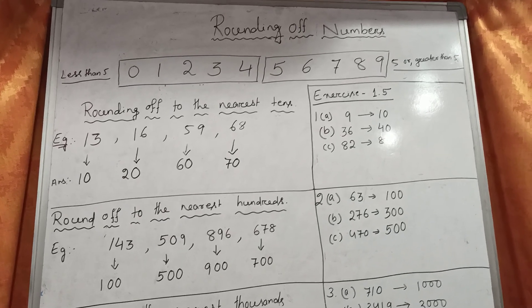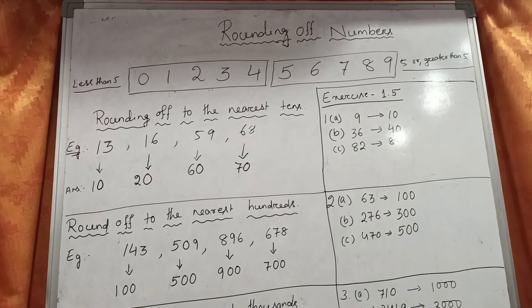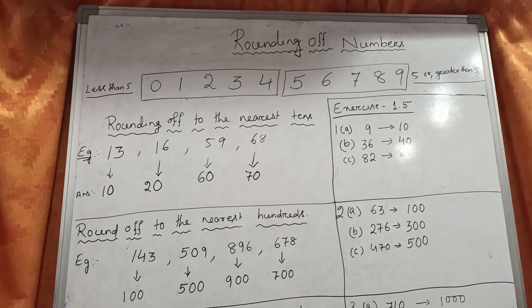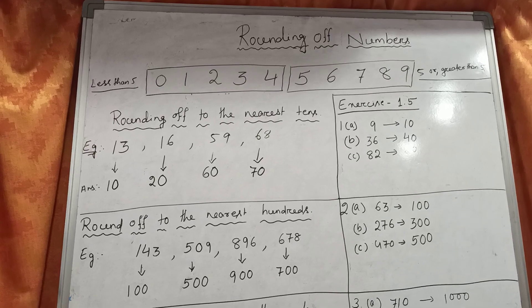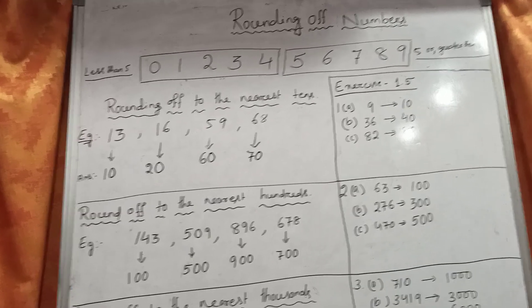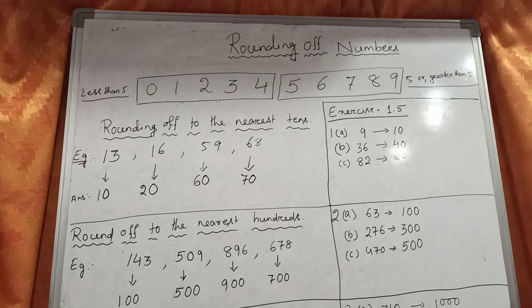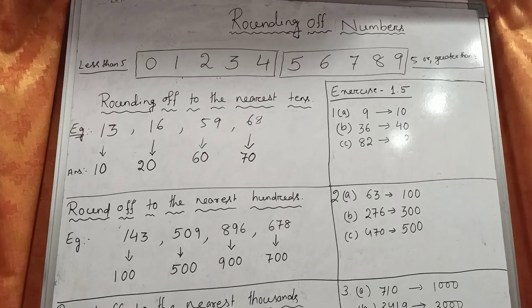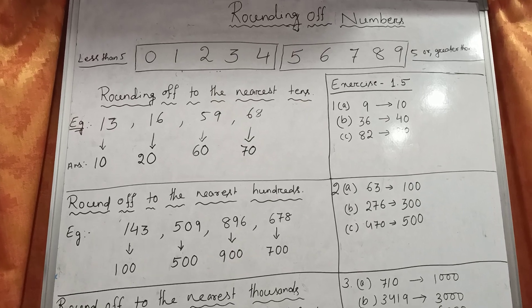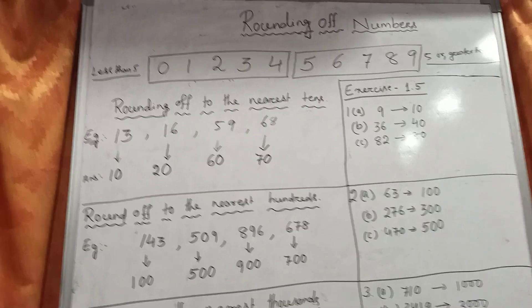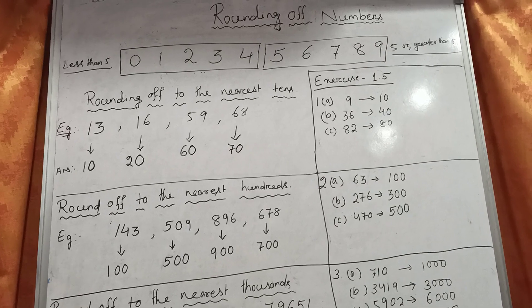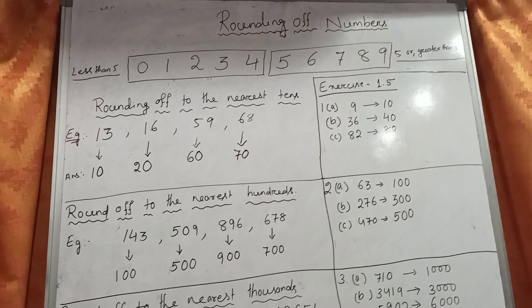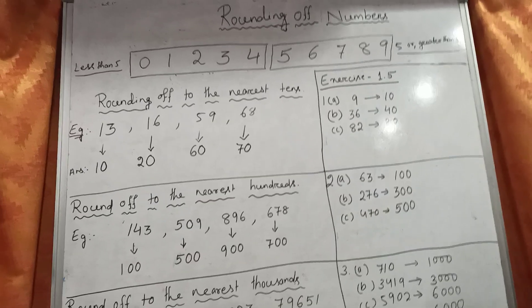Hello children, this is Sobhagya Mahanti. Today I am going to teach you Standard 5 Mathematics Lesson 1.5, that is Rounding of Numbers. What is Rounding of Numbers? Rounding of Numbers means an approximate number, or estimated number, or closer number, or you can say nearer to the given number. So how do we find a rounding number?